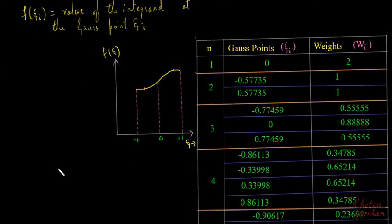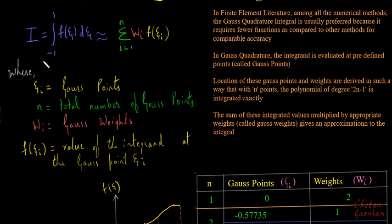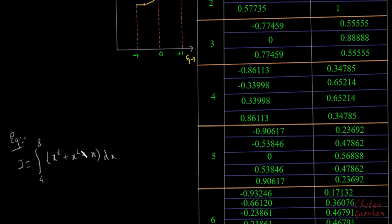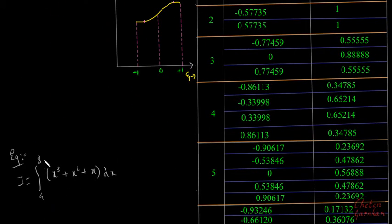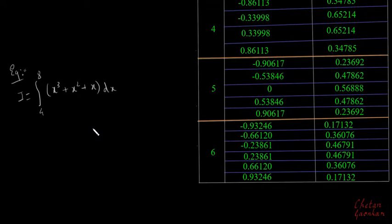We will take an example and see how this method works. We need to evaluate an integral over the domain from four to eight. If we compare this with the Gauss quadrature formula, we observe that the formula's domain only varies from minus one to plus one, whereas this integral's domain varies from four to eight. So we cannot apply the Gauss quadrature formula directly because the domains are not the same.